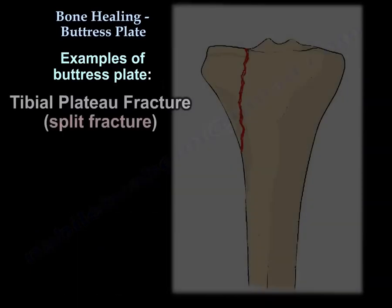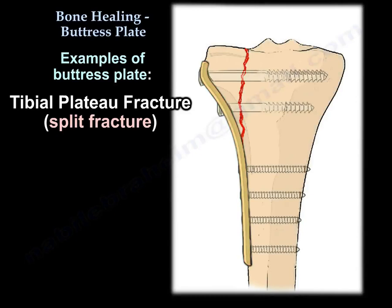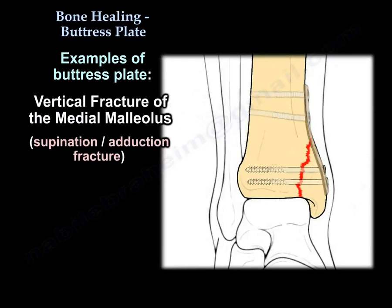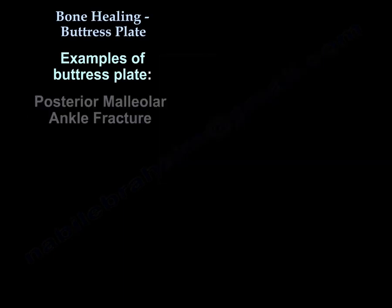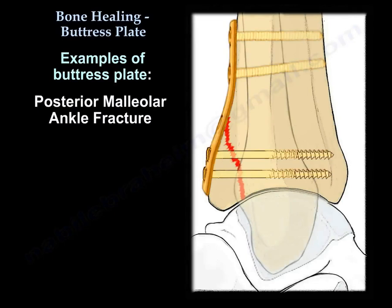Another great example is the tibial plateau fracture — the split fractures or the split depression fracture — where a buttress plate is used. Another example is a vertical fracture of the medial malleolus, which is a supination adduction fracture, or the posterior malleolar fracture of the ankle.